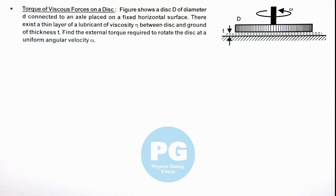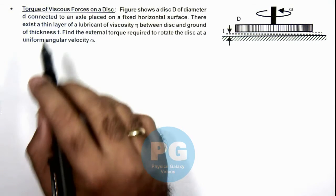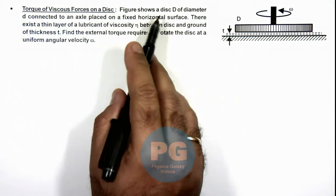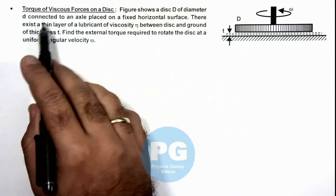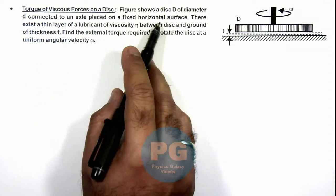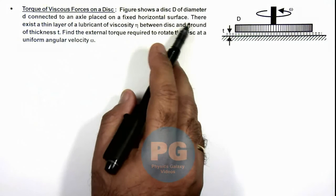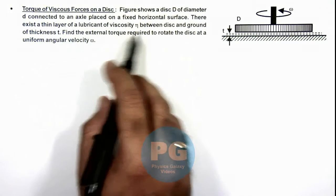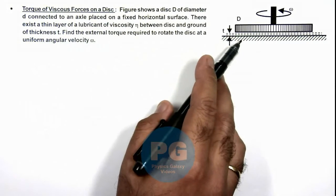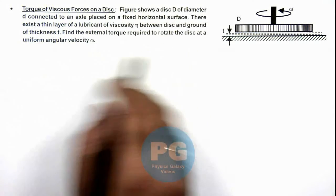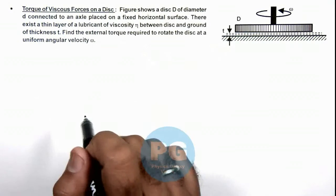In this illustration, we'll be calculating the torque of viscous forces on a disc. The figure shows a disc D of diameter small d connected to an axle placed on a fixed horizontal surface. There exists a thin layer of a lubricant of viscosity eta between disc and ground of thickness t. We are required to find the external torque required to rotate the disc at a uniform angular velocity omega.